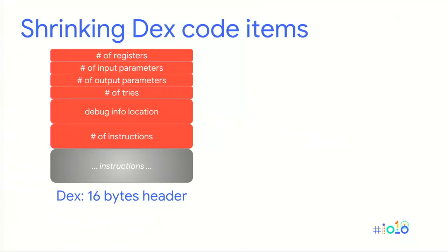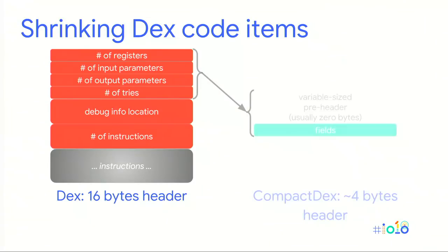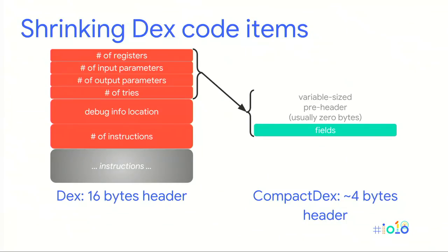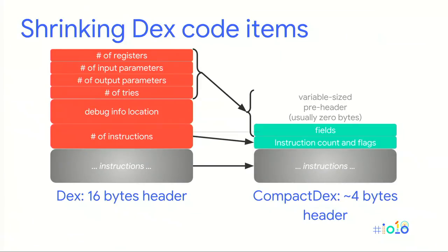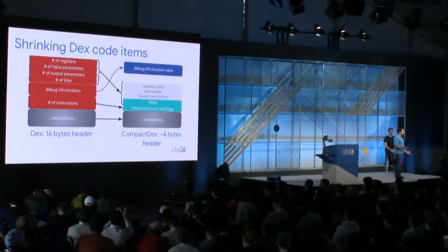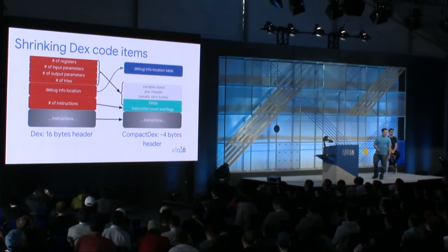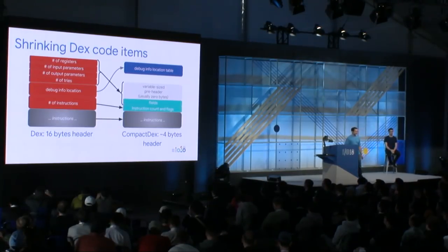Let's look at how we actually shrink the DEX code items. Apart from the instructions, each code item has a 16-byte header, and most of the values in the header are usually small values. We shrink the fields in the header to be 4 bits each, with an optional pre-header to extend them as required. The pre-header is 0 bytes in most cases but can be up to 12 bytes in the worst case. We also shrink the instruction count to 11 bits instead of 32 bits, using the five remaining bits for ART-specific flags. Finally, we move the debug information into a separate space-efficient table to enable more deduplication. Overall, this saves around 12 bytes per code item in the Compact DEX file.